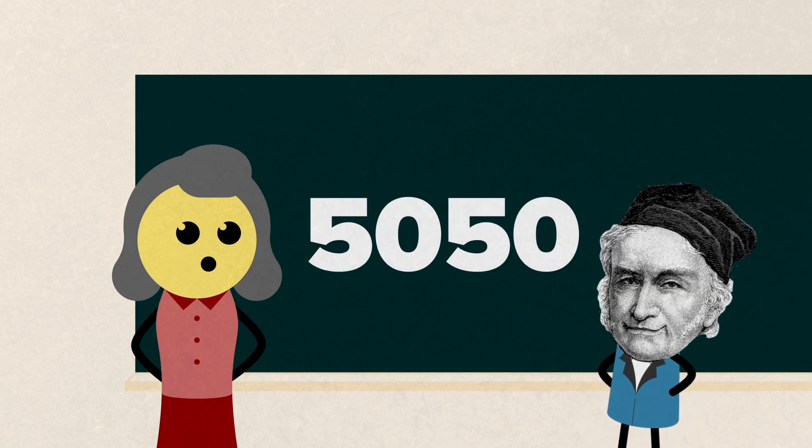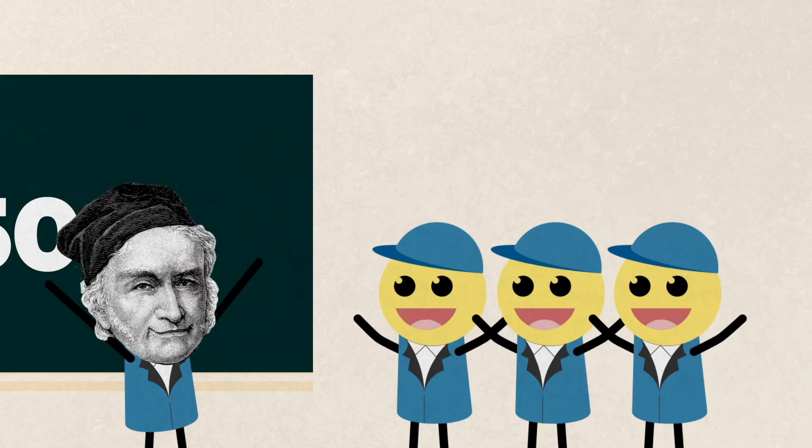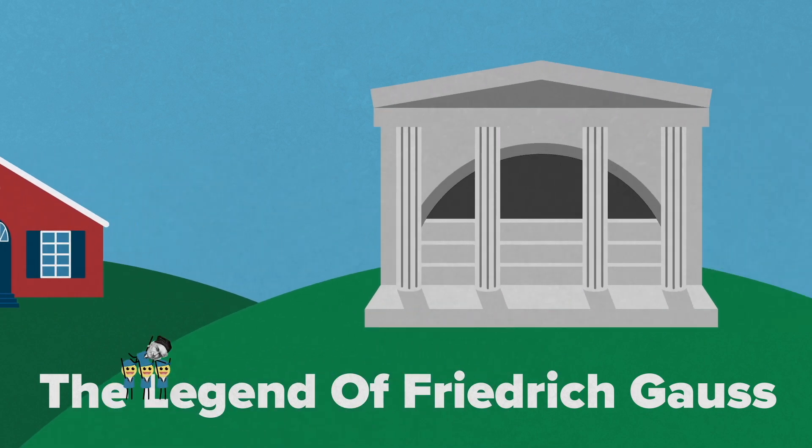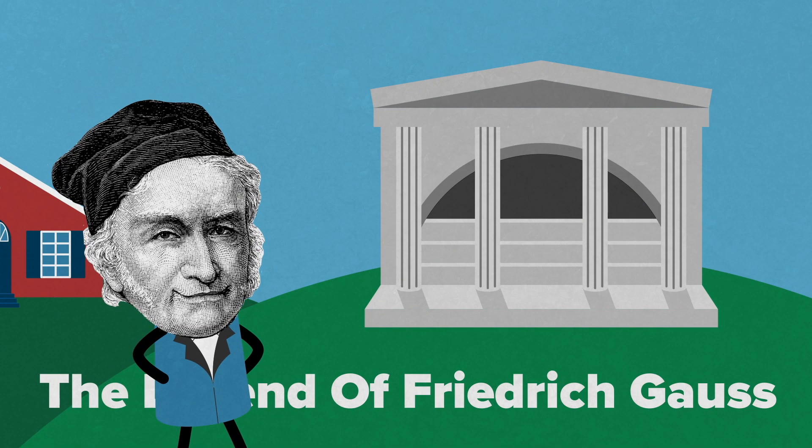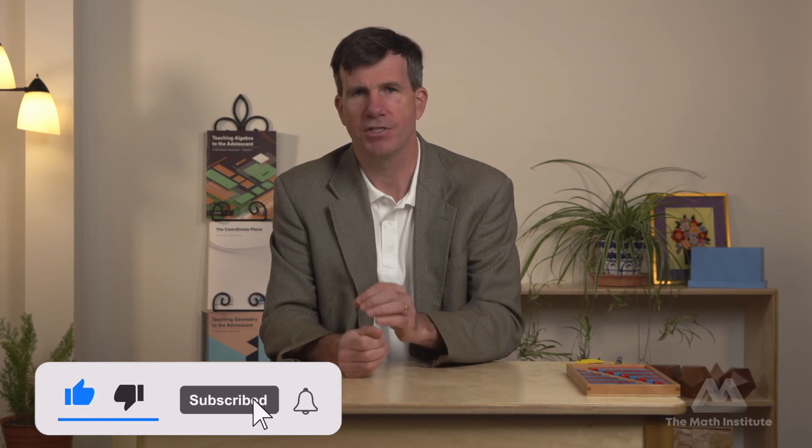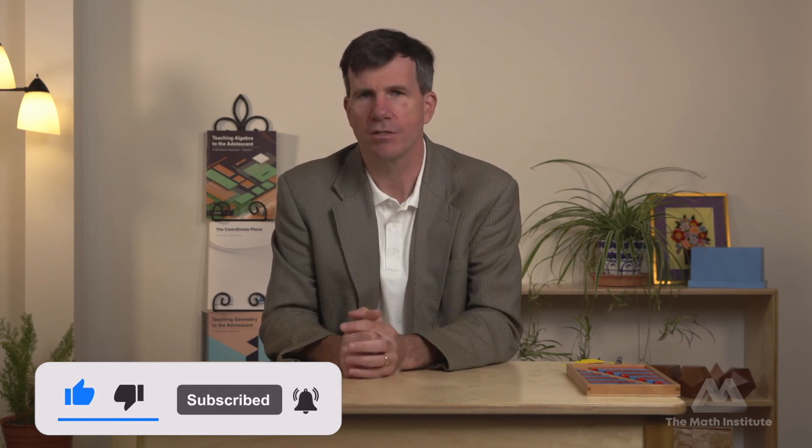And so, from that point on, his parents recognized that this kid is pretty special. They sent him to a special school for mathematics, and he actually became one of the most famous mathematicians of all time. Now, let's talk about how Gauss might have figured this out, and let's go back to our original question where we just added numbers 1 through 10. Let's go ahead and look at a material that can help to see physically what Gauss might have been thinking.